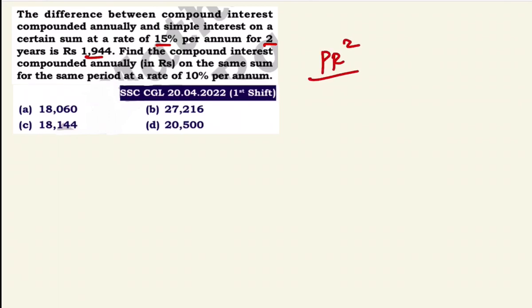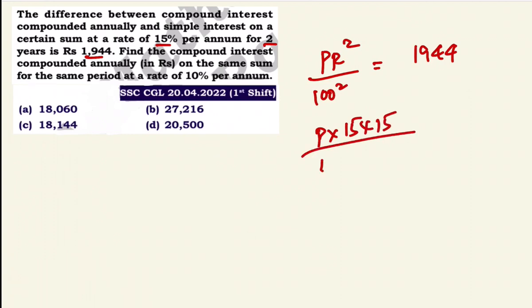Using the formula: P × R² / 100² = difference. So P × 15 × 15 / 100 × 100 = 1,944. This gives us the principal.